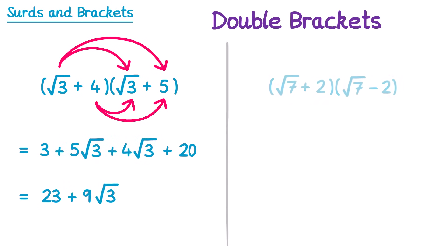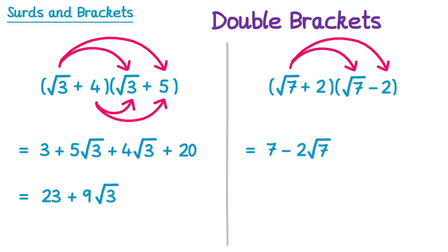Let's try a second example. We start with square root 7 times square root 7, which is just 7. Then root 7 times negative 2, which is negative 2 root 7. Then 2 times root 7, which is positive 2 root 7. And then positive 2 times negative 2, which is negative 4.